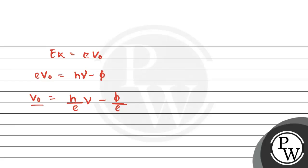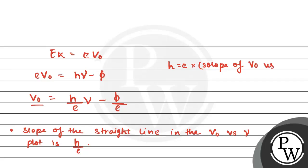To determine Planck's constant from the V₀ versus ν graph, we note that the slope of the straight line in the V₀ versus ν plot is h/e. If we measure the slope, then the value of Planck's constant h can be calculated as: h = e × (slope of the V₀ versus ν curve).